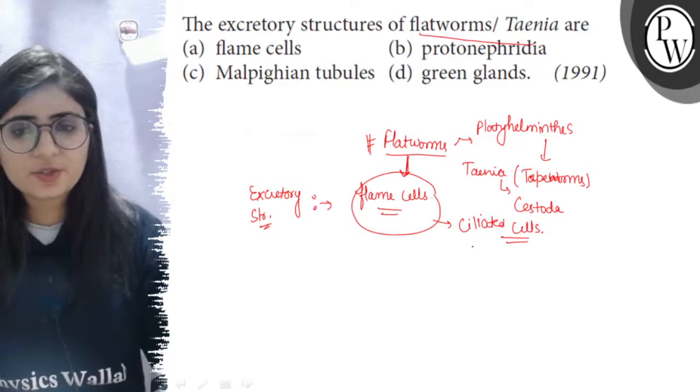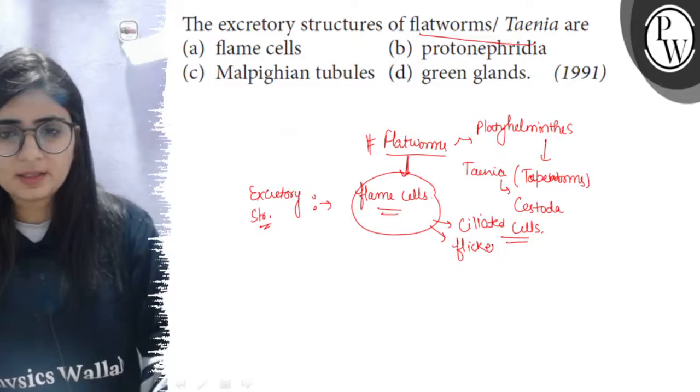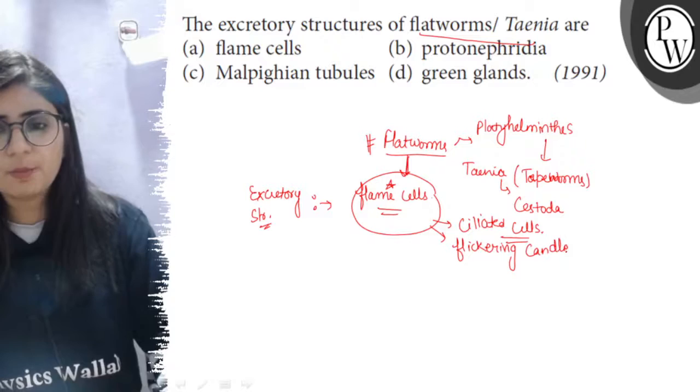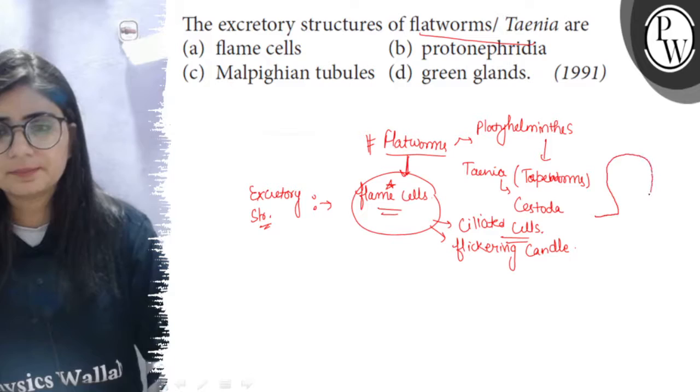If they are flagellated they are known as solenocytes. And the cilia appear like the flicker of a candle. So flickering candle-like appearance because of beating of cilia gives the flickering candle-like appearance. So that is why they are known as the flame cells. So flickering candle-like movement is seen. If we draw the structure then they look like this.